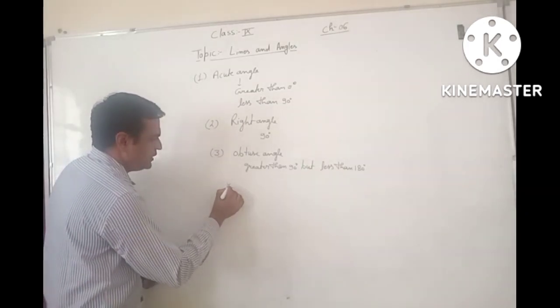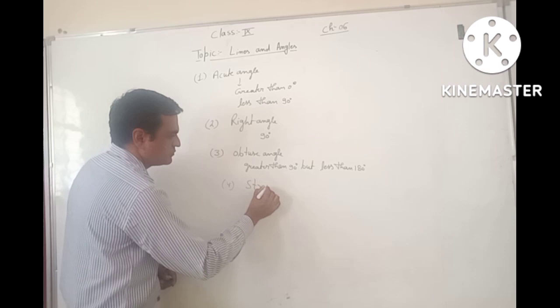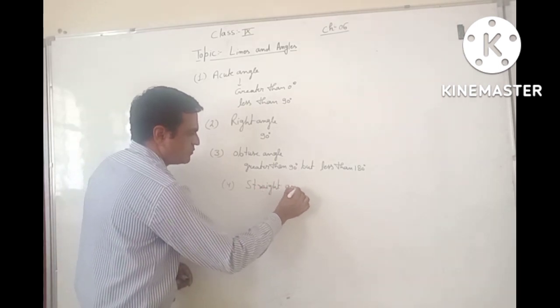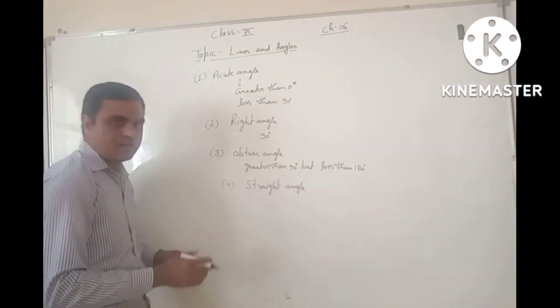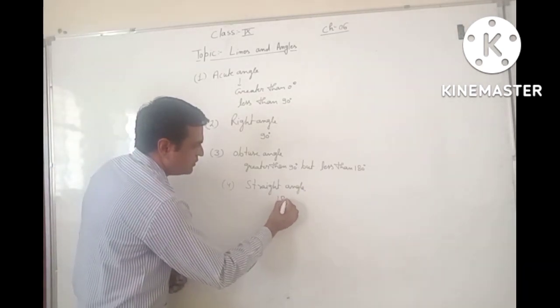Now, the fourth point is Straight Angle. Straight Angle is an angle whose measure is 180 degree.